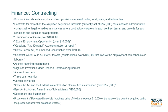There is equal employment opportunity for contracts over $10,000. We're looking for the Copeland Anti-Kickback Act for construction repair provisions, the Davis-Bacon Act, the Contract Work Hours and Safety Standards Act for constructions over $100,000, agency reporting requirements, rights to inventions made under a contractor agreement, three-year records retention, conflict of interest, Clean Air Act, Federal Water Pollution Control Act, the Byrd Anti-Lobbying Amendment, debarment and suspension provisions, and procurement of recovered materials.